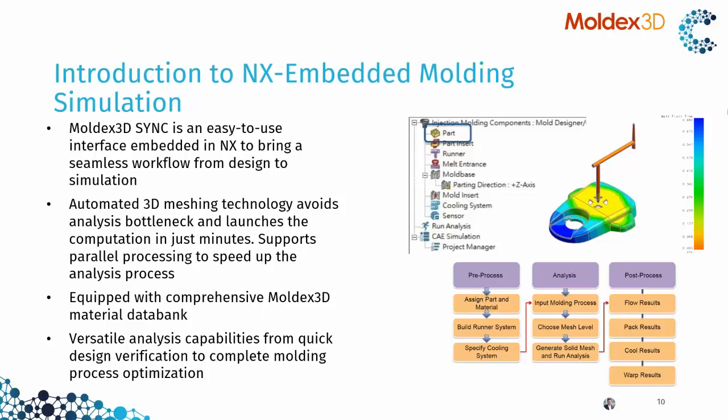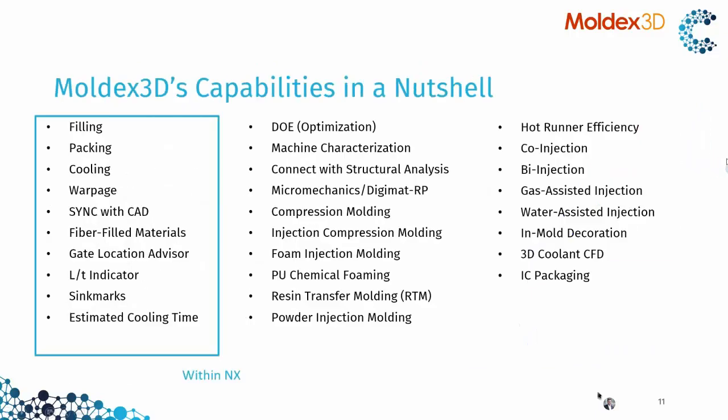Run the analysis and then check the results inside the NX environment — all supporting the full power of your CPU so it can run with multiple cores, increasing calculation speed. On the left is what we provide in the NX integrated package: the basic functions for part designers — filling, packing, cooling, warpage — support for fiber-filled materials, and some handy gadgets like gate location advisor, flow lens, thickness indicator, sink mark prediction, or estimation of the cooling time even without designing the cooling system.